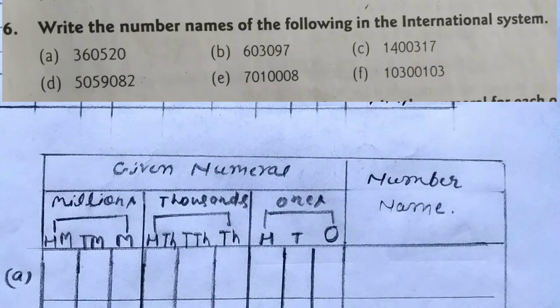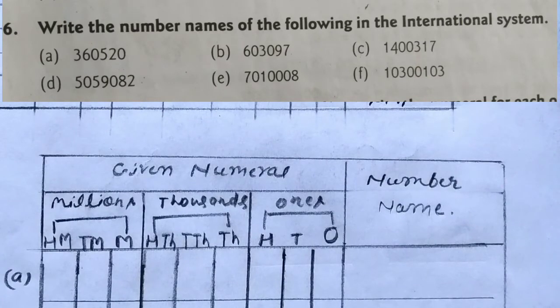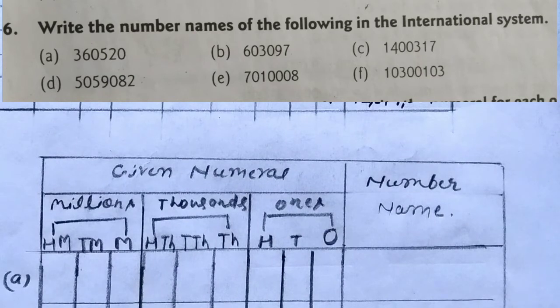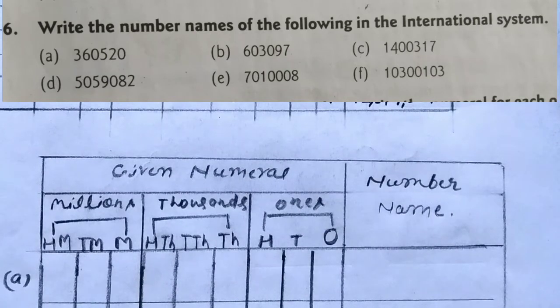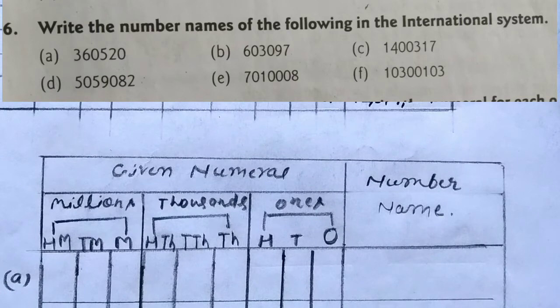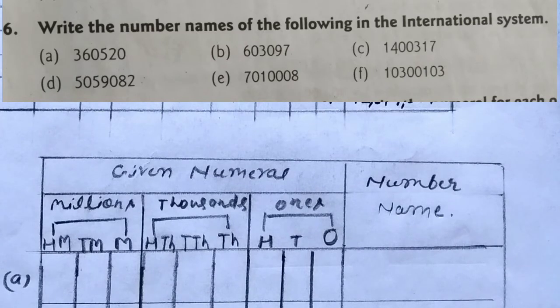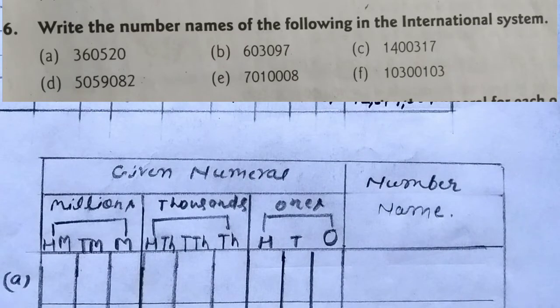Here some numerals are given. Sorry, question number 6. Some numerals are given and we have to name them in the international system. So first we will write the number in place value chart, in international place value chart, and then we give the number name. So let's write the number.